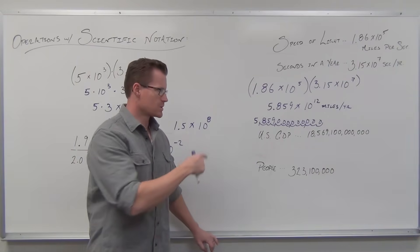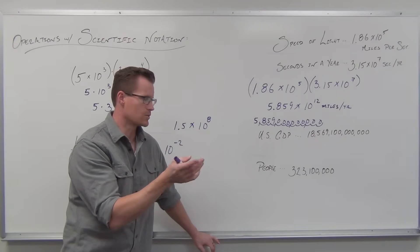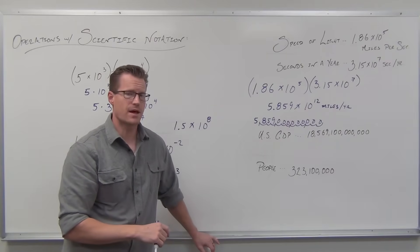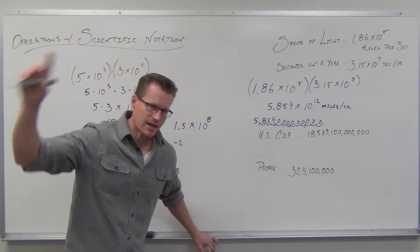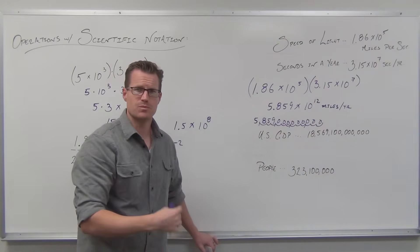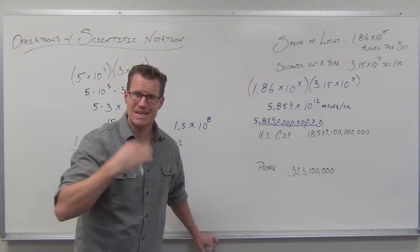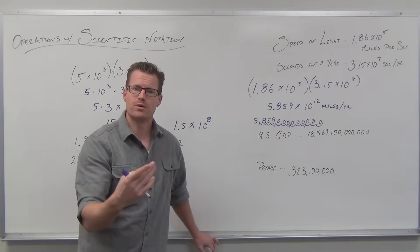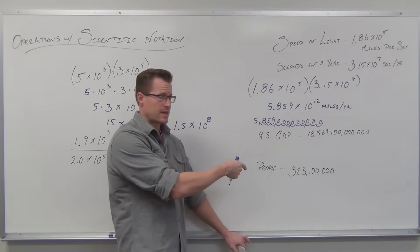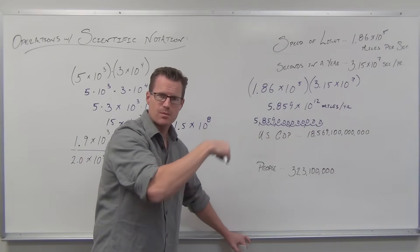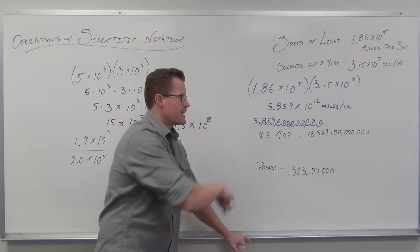How about another one? The United States gross domestic product in 2016 was $18,569,100,000,000, roughly. At the time, there were 323,100,000 people in the United States. Let's see how much dollars per person that is. If the entire nation produced this amount and there's this many people producing it, what is that per person? That's a division concept. We're going to take the amount of money and divide it equally among the amount of people. We could do this straight up with a calculator, but sometimes numbers get so large you can't punch them in. So scientific notation allows us a way to abbreviate that.